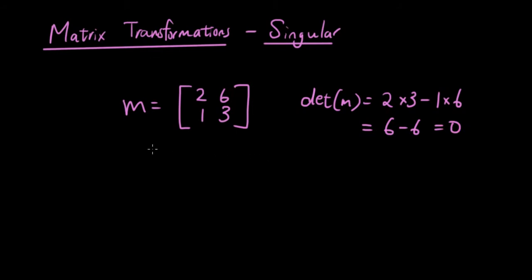So therefore, the inverse of m does not exist. So there are two things that are going to happen. Number 1, once you have transformed a point into the image, you cannot go back to the original point.